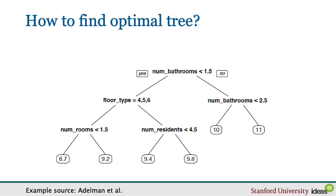The second challenge is: where do I stop? I could always improve my fit by adding another split. In the extreme, if there is only a single instance left within each leaf, we fit the training data perfectly. But it is very unlikely this would produce a good out-of-sample prediction — for an unseen house, the leaf it falls into may contain only one very different house, leading to a bad prediction.